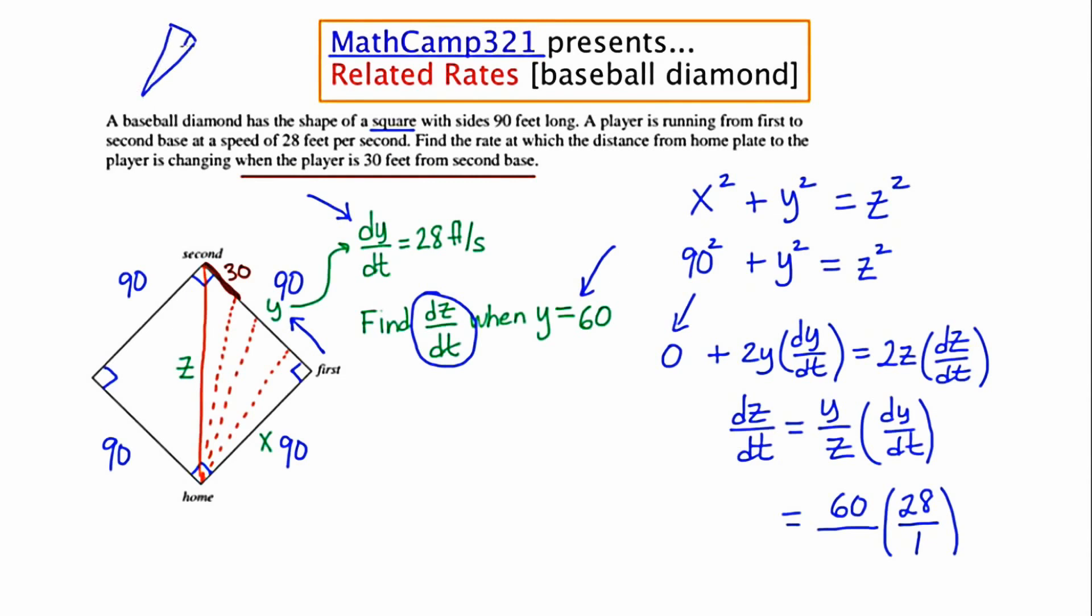I'm going to draw this little right triangle. This is the 90 which represents from home to first base. This leg is 60, the amount of space that the runner has already run. And now I want to find out what z is. So I'm going to use the Pythagorean theorem to figure out what z is at this particular moment when the runner has run 60 feet. So I'm going to say that 90 squared plus 60 squared is equal to z squared.